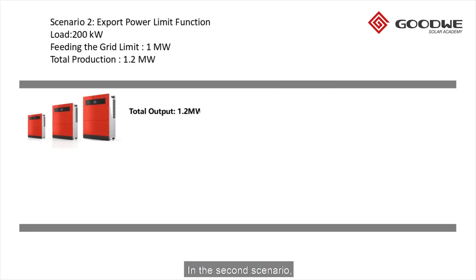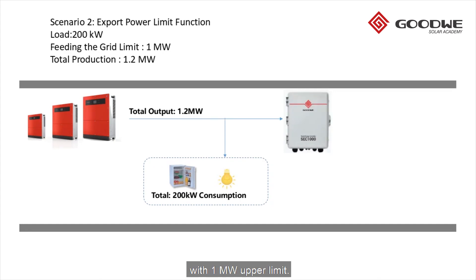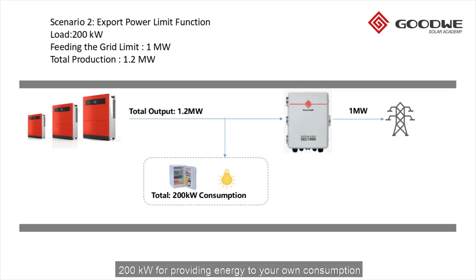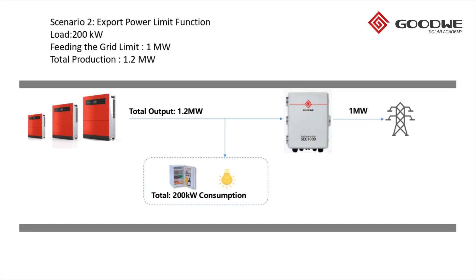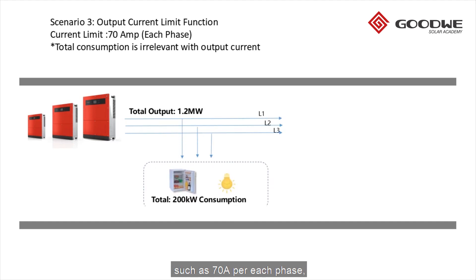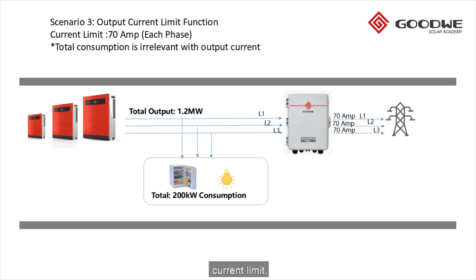In the second scenario, if your local grid company allows you to sell electricity to the grid with a 1 megawatt upper limit, then we have to use the export power limit function and the inverter will produce 1.2 megawatt instead of 1.5 megawatt — 200 kilowatt for your own consumption and 1 megawatt directly going to the grid. In the third scenario, if you have an output current limit such as 70 amps per each phase, then the inverter will reduce the output current in accordance with your output current limit.